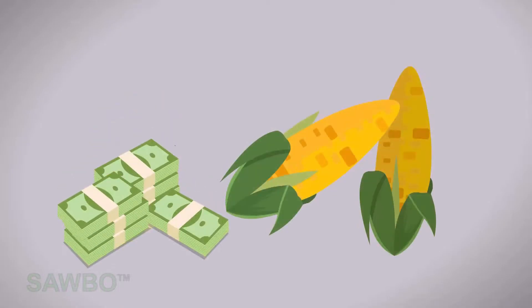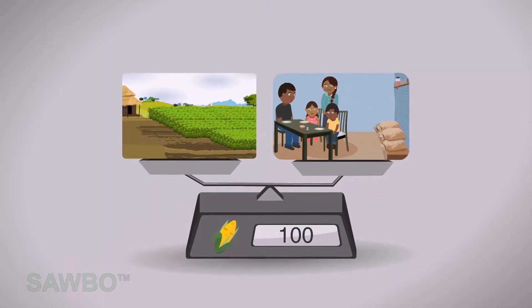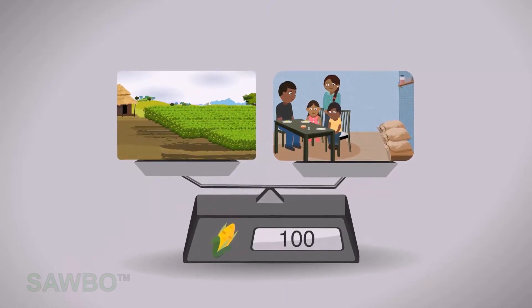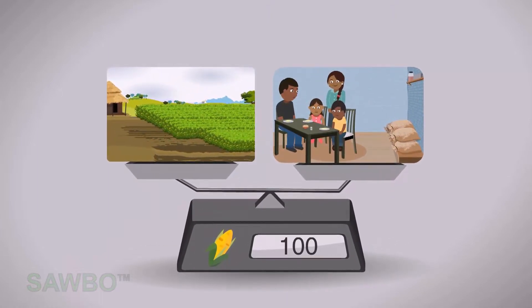This video shows why the prices change for agricultural products. Many factors influence the price of an agricultural commodity.